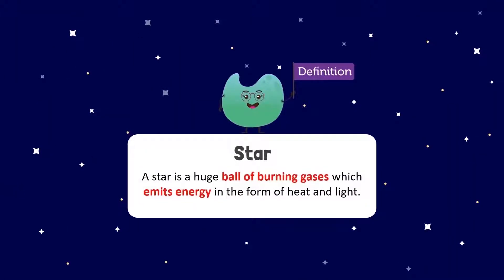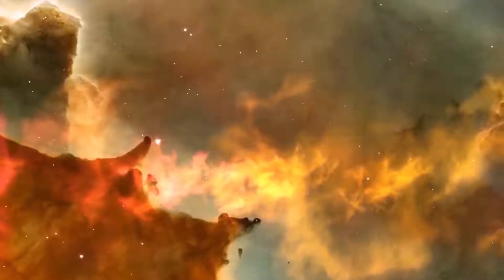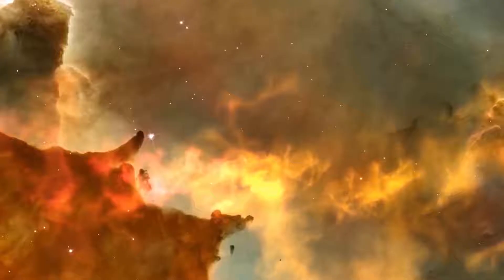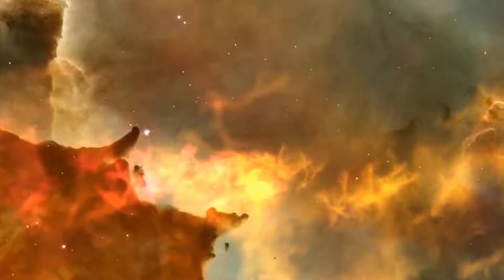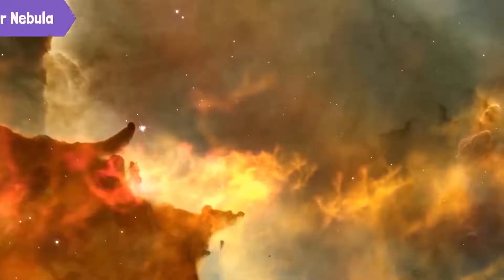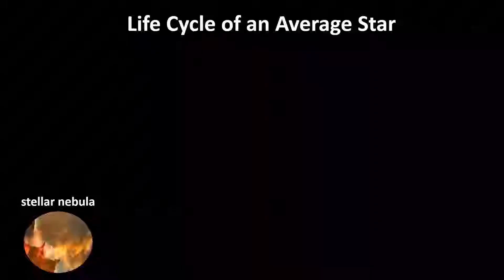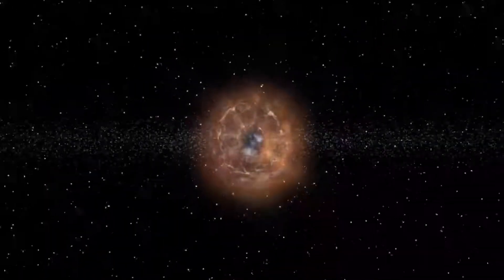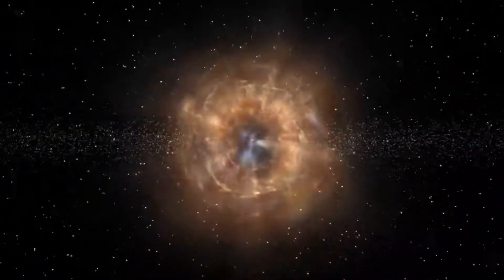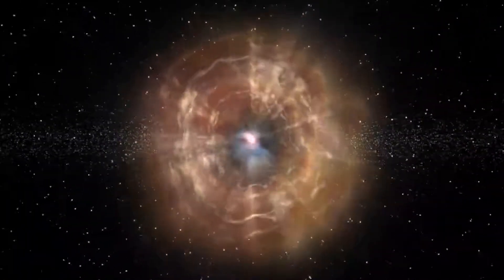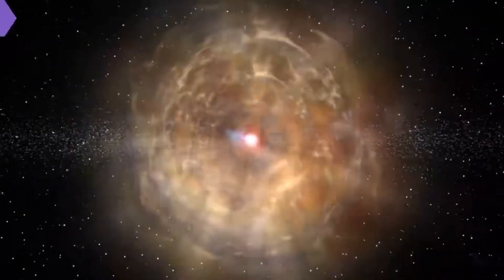A star is a huge ball of burning gases which emits energy in the form of heat and light. Let's first see how an average-sized star is born. See these huge clouds of dust and gases? Each of these clouds is called a nebula or a stellar nebula. A nebula collects more dust and gas, pulling them inwards into a hot, spinning ball of matter. This ball of hot matter is called a protostar.